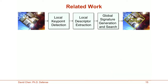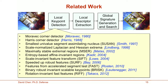In a visual search system, there are usually three main processing blocks: local keypoint detection, local descriptor extraction, and global signature generation and search. For keypoint detection, researchers have proposed many methods. Some of the earliest were the Moravec, the Harris, and the Susan keypoint detectors. Subsequently, researchers developed multi-scale extensions such as MSCR, SIFT, and SURF. More recently, there has been increased interest in building very fast detectors, with examples including the FAST, BRISK, and RIF detectors.